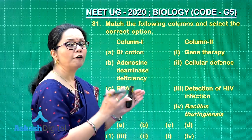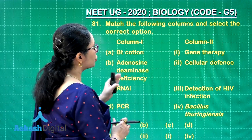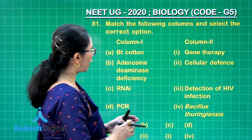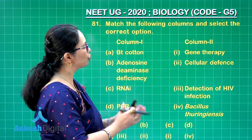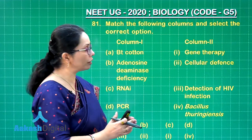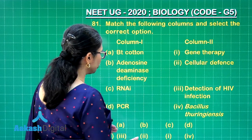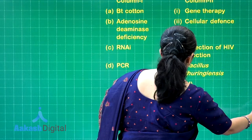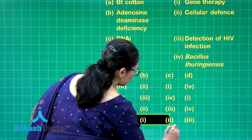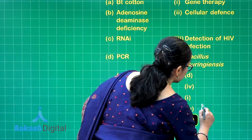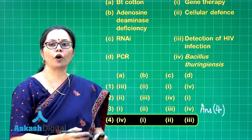RNAi is a defense mechanism found in eukaryotic cells, so it matches with cellular defense. PCR is routinely used as a method of molecular diagnosis, especially for HIV — so D matches with 3 (detection of HIV infection). Among the four options, the fourth option contains all correct matches and is the correct answer.